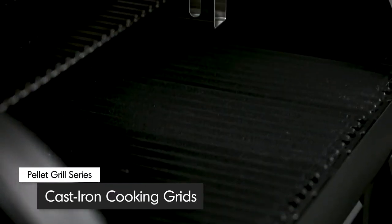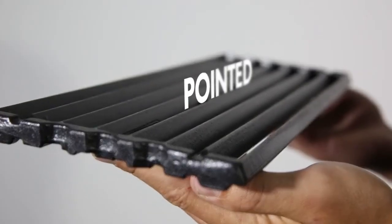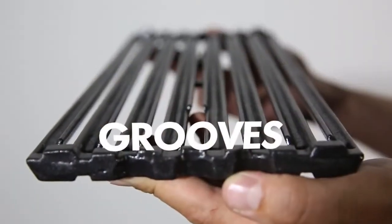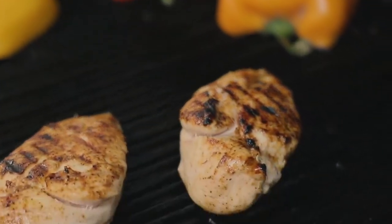These professional grids are reversible. One side is pointed to give you perfect grill marks, while the other side is grooved to capture juices for continuous basting while you cook.